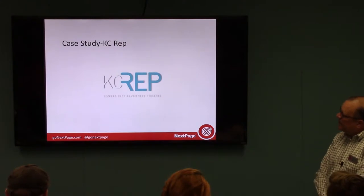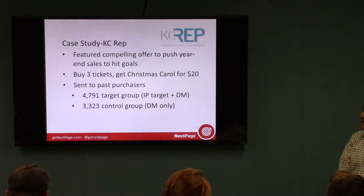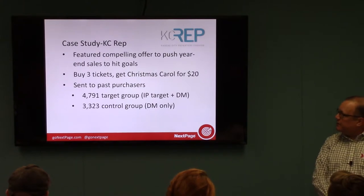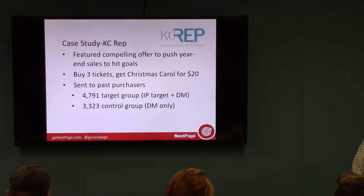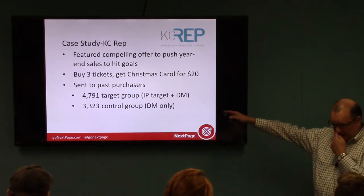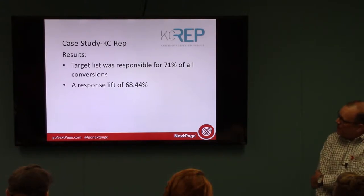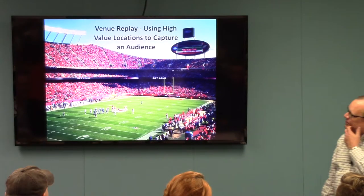KC Rep was another case study — an end-of-year push to promote ticket sales with a buy-three-get-a-Christmas-Carol-ticket offer for only $20, sent to past purchasers. The target group cost was $47.91 and the control group was $3,300 — representing about the whole group with roughly a 60% match. The target list was responsible for 71% of all conversions, and the response lift was almost 70%. They were very happy.